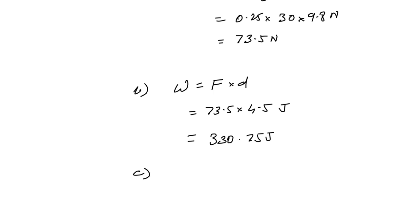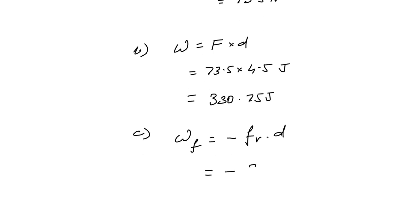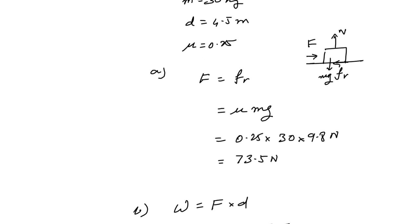Part (c), how much work is done on the crate by friction? The work done by friction will be equal to negative frictional force times distance d, so it will be simply -330.75 J because the frictional force is acting to the left while the displacement is to the right.